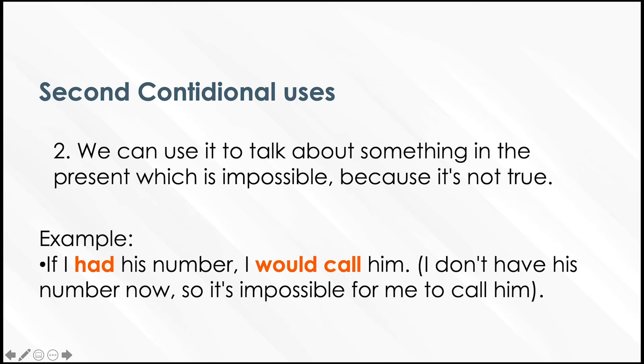Vamos a utilizar el verbo had, o el verbo en pasado, his number. Luego lo vamos a separar por una coma. Vamos a volver a utilizar el mismo sujeto que usamos en la primera oración.